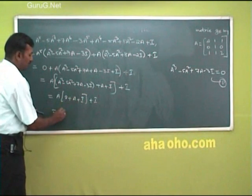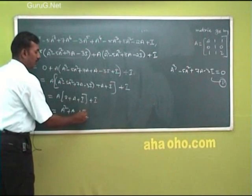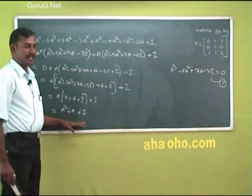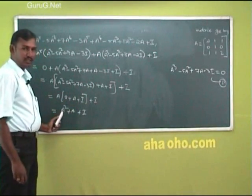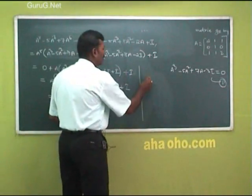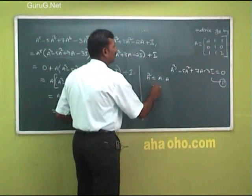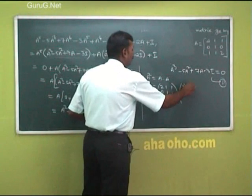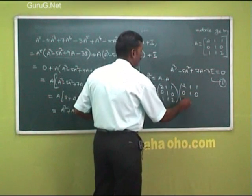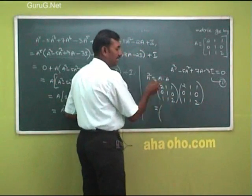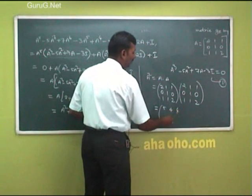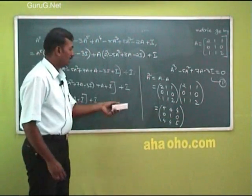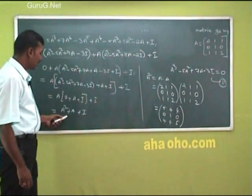Multiplying through: the expression reduces to A² + A + I. Now compute A squared: A² = A into A = [2,1,1; 0,1,0; 1,1,2] × [2,1,1; 0,1,0; 1,1,2]. Multiplying these two matrices gives A² = [5,4,4; 0,1,0; 4,4,5].